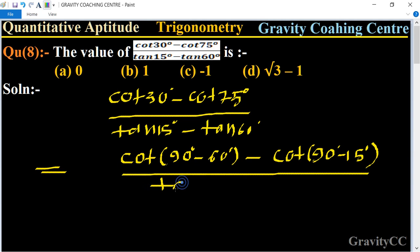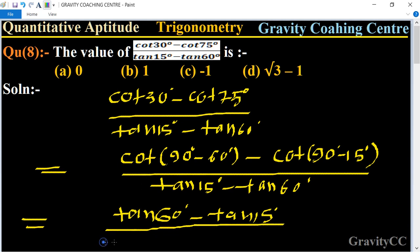And we know that the formula of cot 90 minus theta is equal to tan theta. So it will become tan 60 degree minus tan 15 degree. And now take minus as a common.